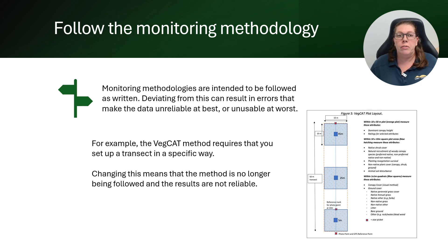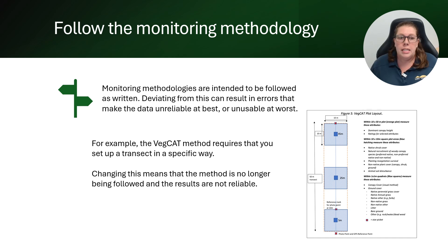The next thing to consider in achieving robustness is following the monitoring methodology as it is written and intended. Most monitoring methodologies have been written in a specific way with specific instructions on how each attribute is measured and recorded. If you don't follow this, we can no longer have confidence in the results being generated, and in extreme cases it may render the data unusable. This includes not taking shortcuts such as guesstimating a measurement or collecting data from a quarter of the site and multiplying it by four. Each time the methodology is not followed as intended, it reduces the robustness of that data and therefore how confident we can be that it's correct.